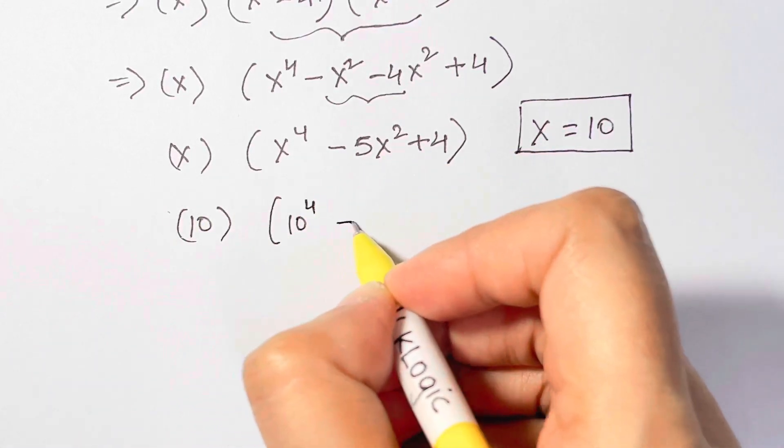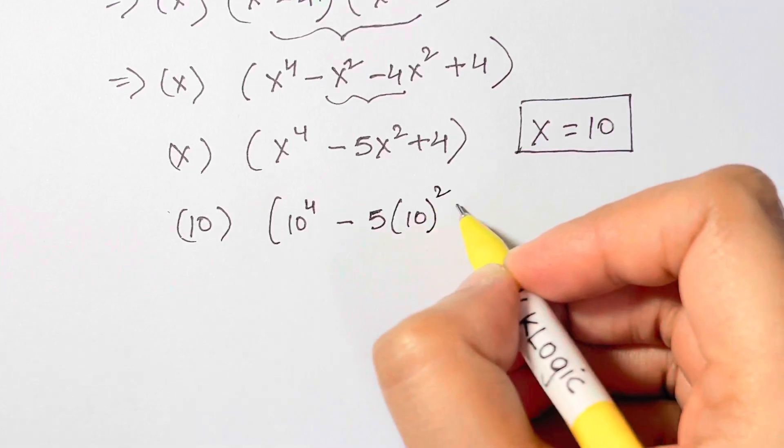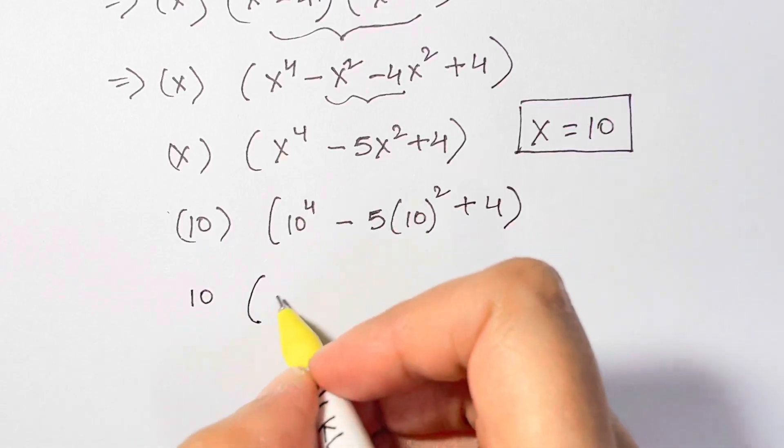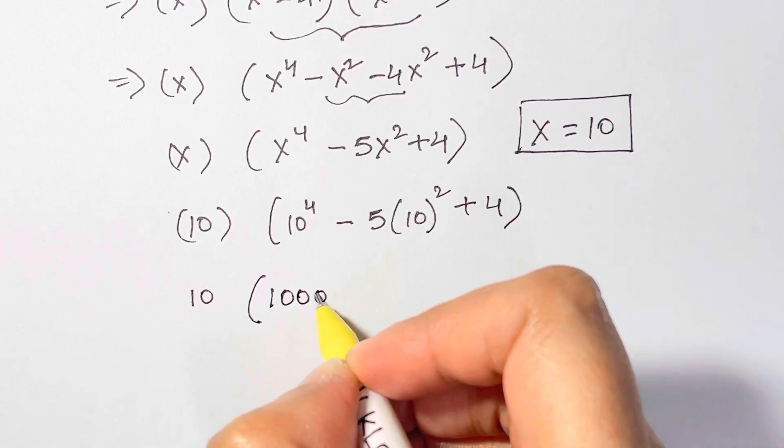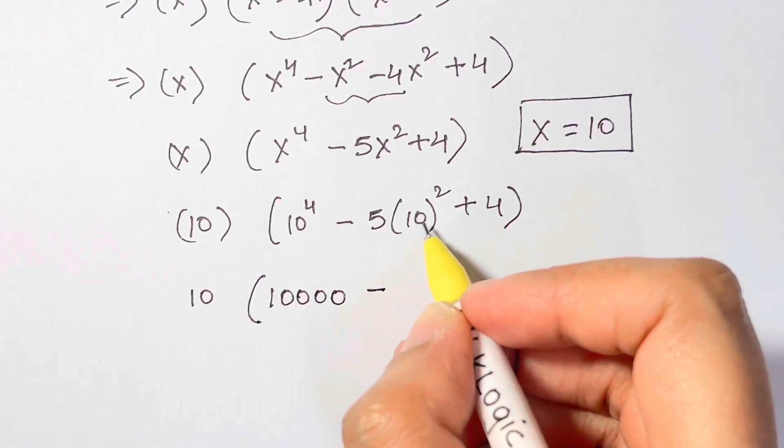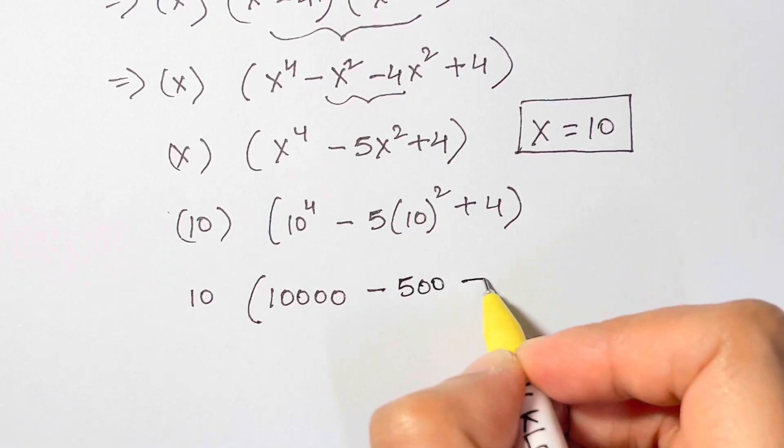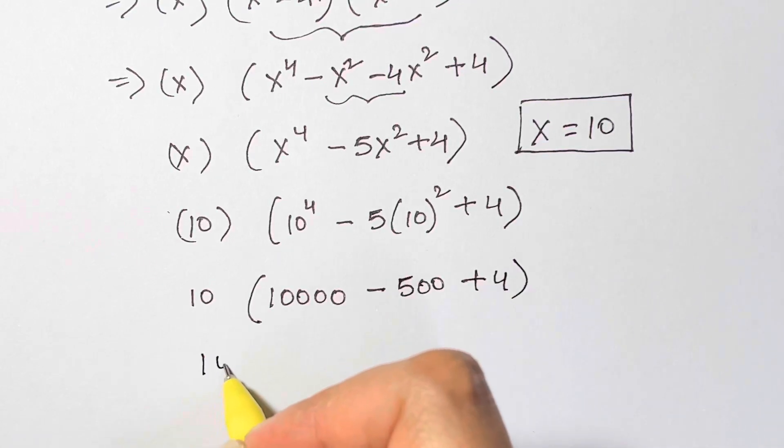10 then 10 to the power of 4 minus 5 times 10 squared plus 4. Now 10 times this is 10000 minus, 10 squared is 100, so 100 times 5 is 500 plus 4.